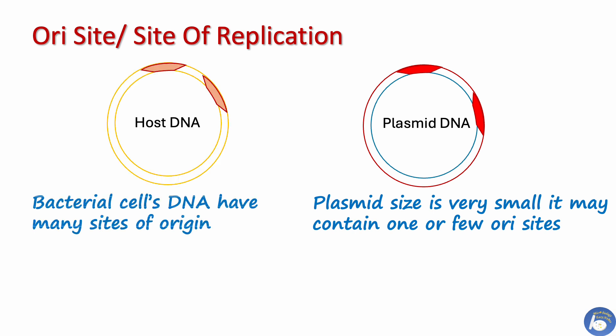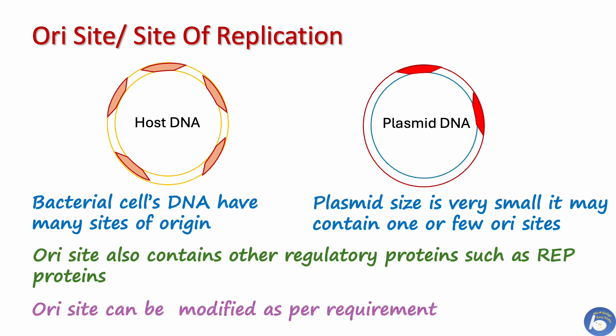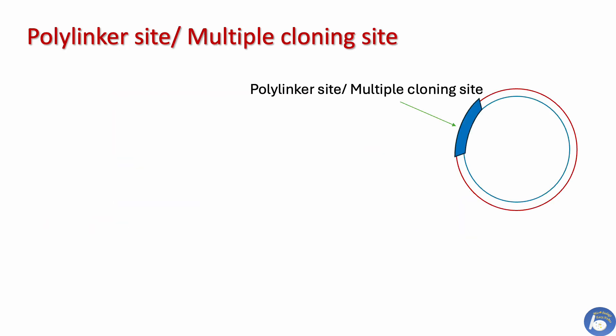While host cell DNA may have many sites of origin, to regulate replication this site also contains regulatory elements such as Rep proteins. Researchers can modify this site to optimize replication and to control the copy number of the plasmid.